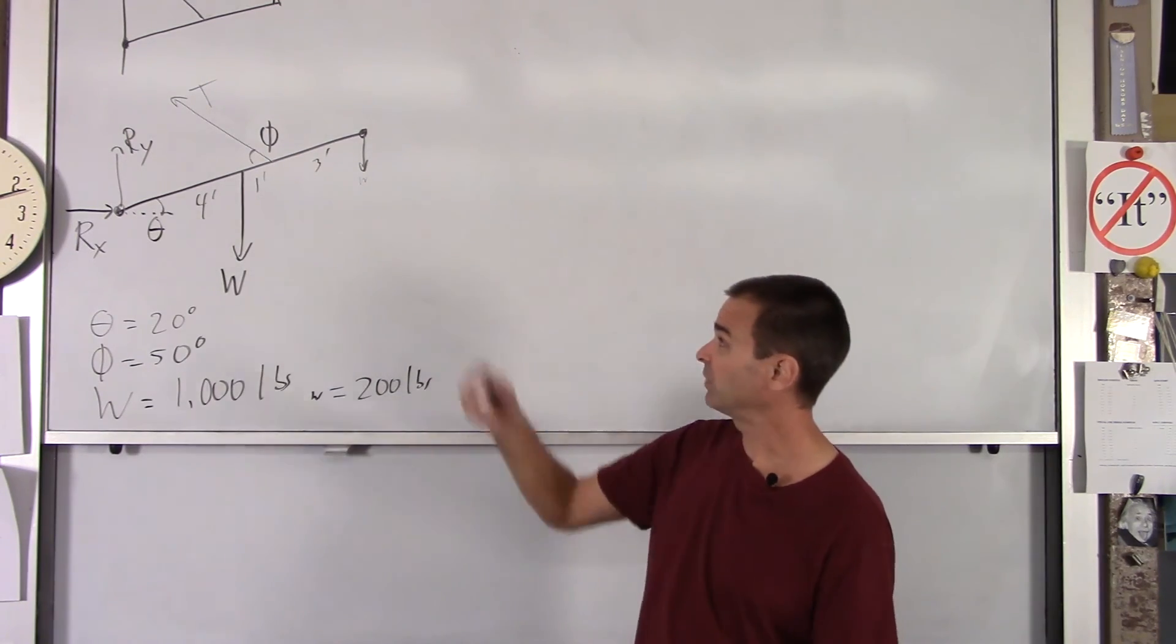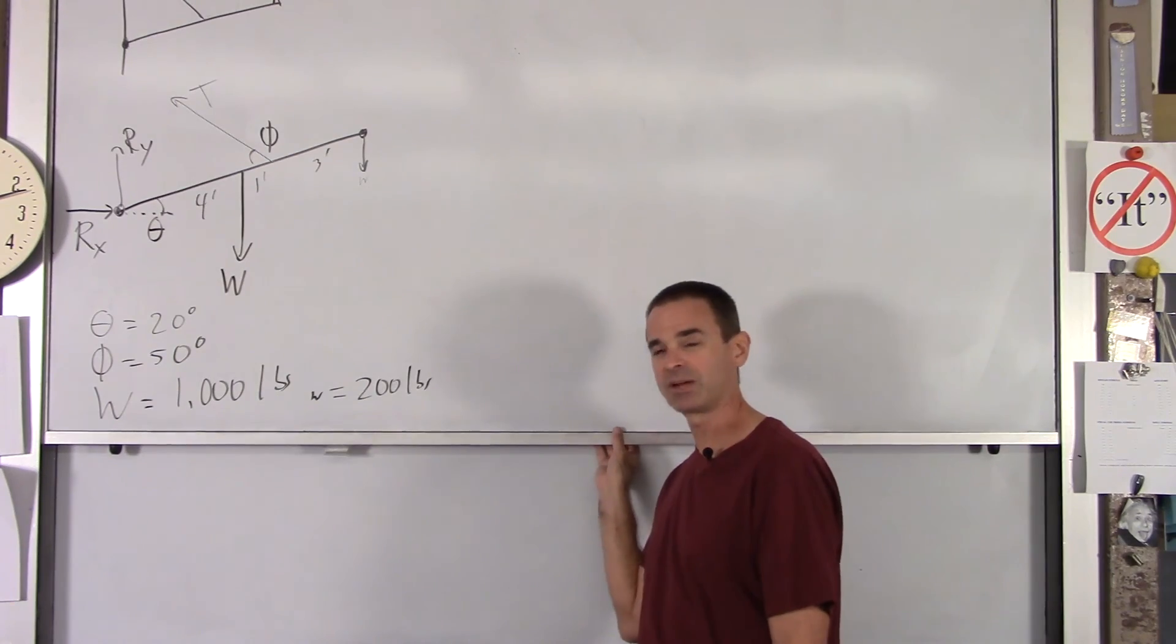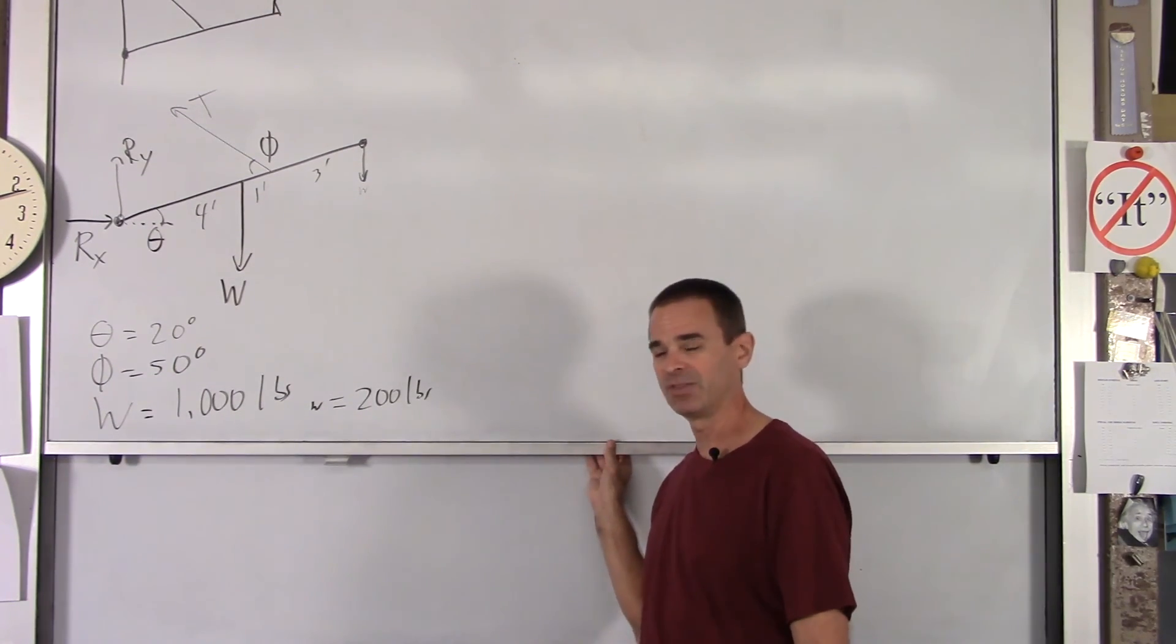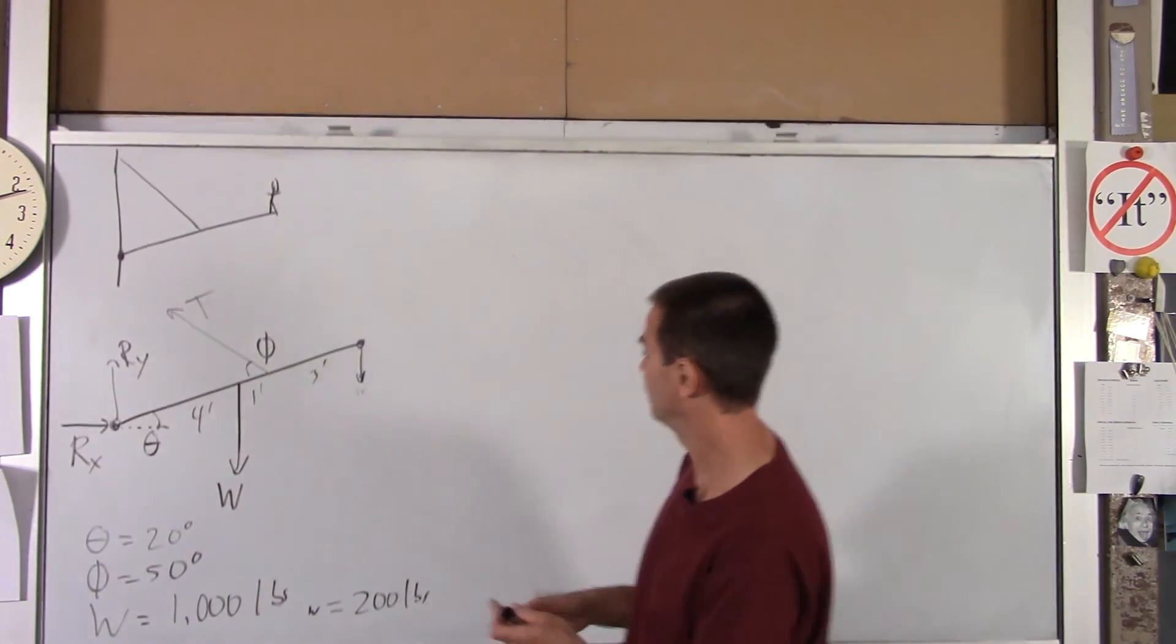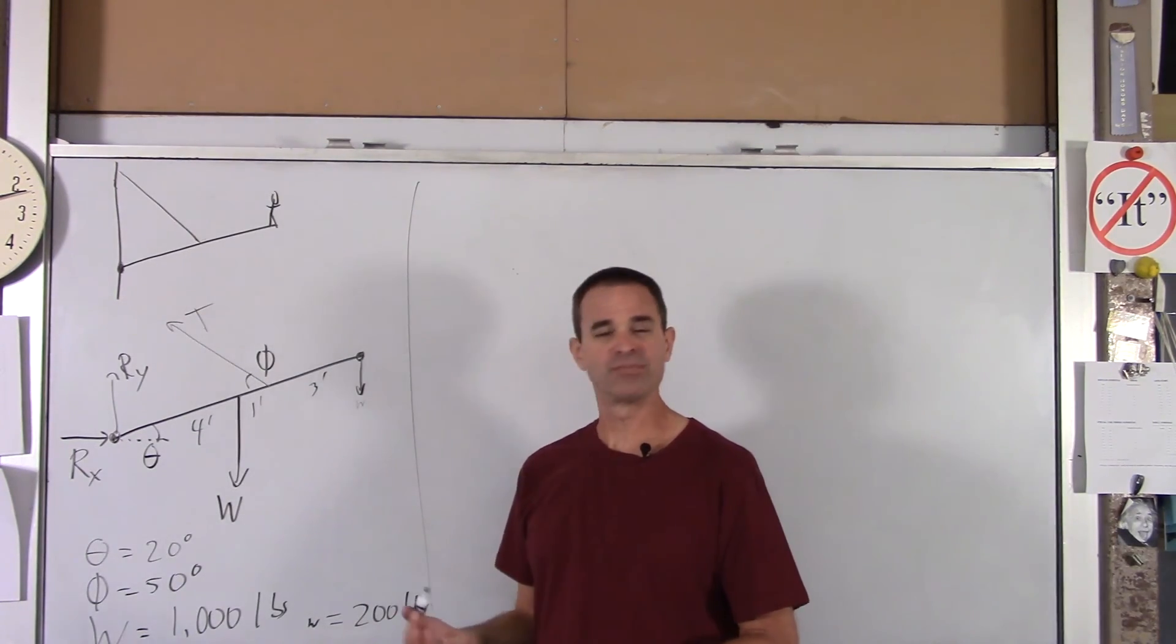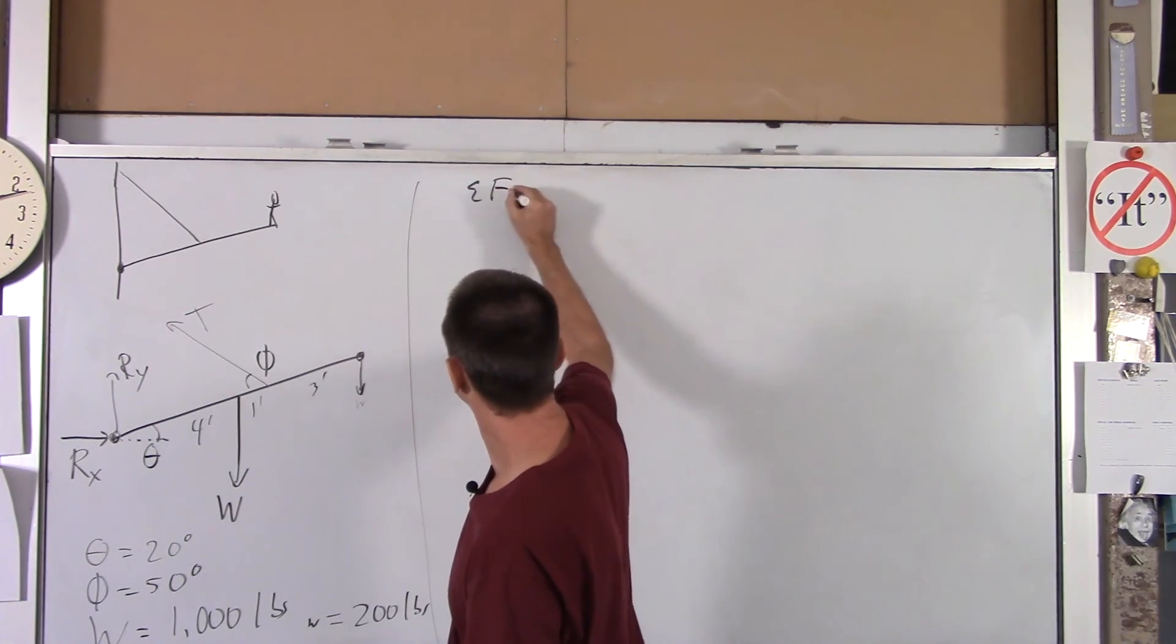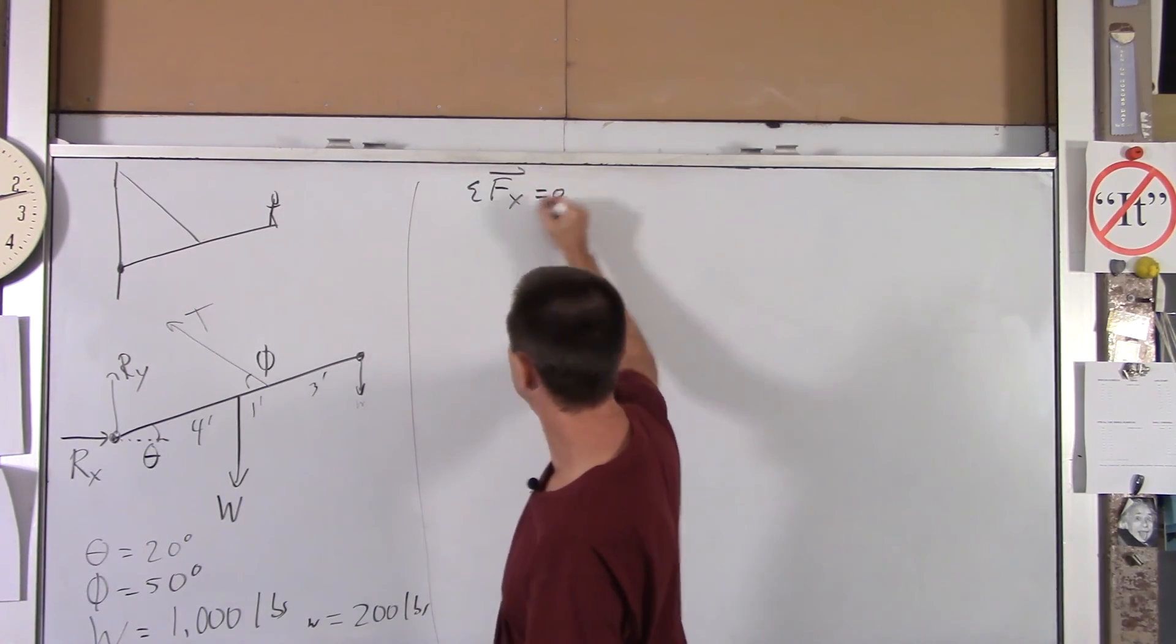And again, we're going to find the tension in the drawbridge cable and the reaction forces at the contact point between the bridge and the wall. So we're going to start with net force, and we'll start with the x direction.